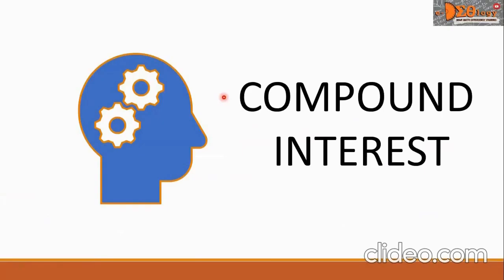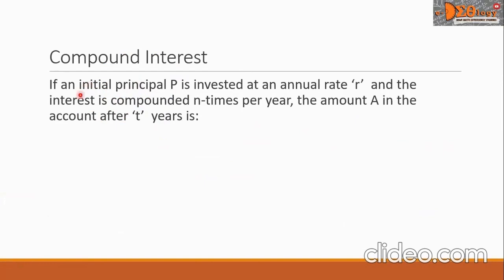Hi everyone. Today we are going to study compound interests. If an initial principal P is invested at an annual rate R, and the interest is compounded N times per year, the amount A in the account after T years is given by this formula.